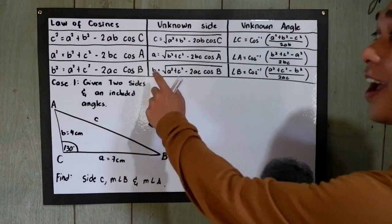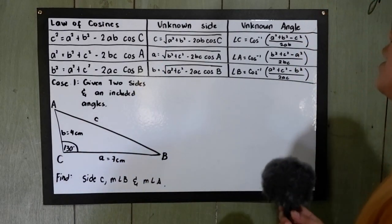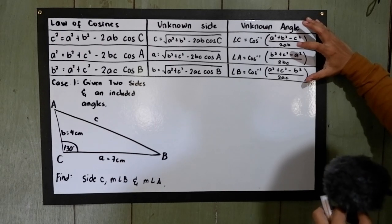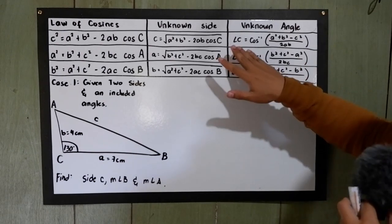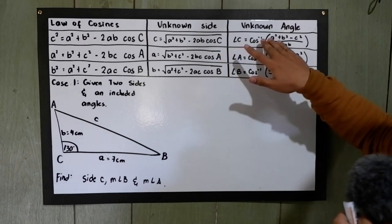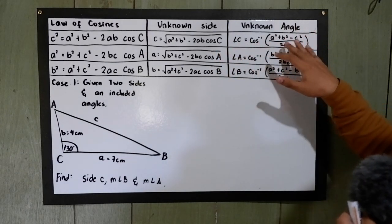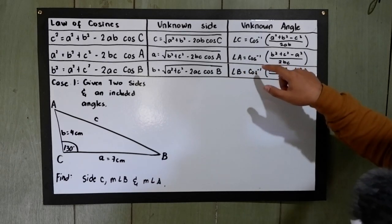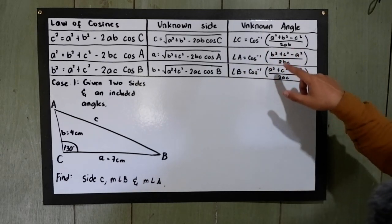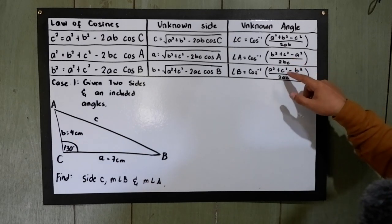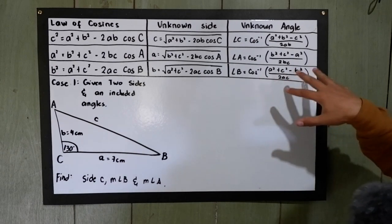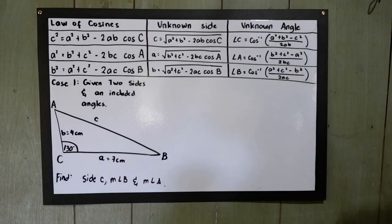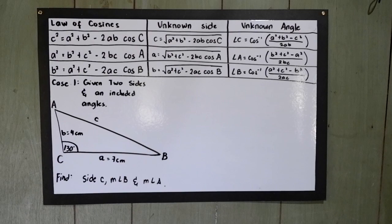The same thing applies if we are going to find angle A and angle B. If the unknown is the angle, we are going to use the following formulas. If the unknown is angle C, use the inverse cosine of the quantity a squared plus b squared minus c squared, all over 2ab. Angle A is equal to cosine inverse of b squared plus c squared minus a squared all over 2bc. And angle B is equal to cosine inverse of a squared plus c squared minus b squared all over 2ac. Now, to further understand, let's have our first example.